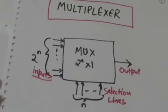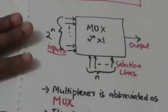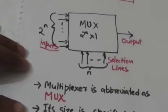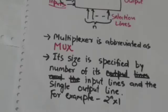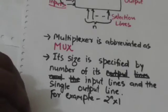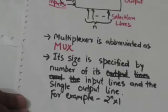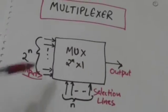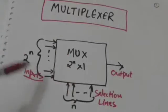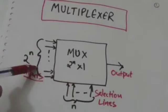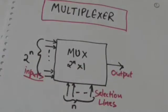Multiplexer is abbreviated as MUX. Its size is specified by the number of its input lines and the single output line. For example, 2^n × 1. The size of this multiplexer is 2^n × 1 because it has 2^n input lines and 1 output line.